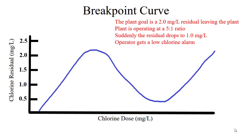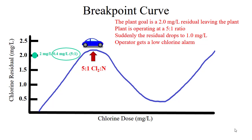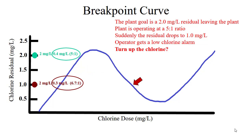You are an operator alone on shift at 2 o'clock in the morning — because problems always occur in the middle of the night or late on a Friday afternoon — and you get a low chlorine alarm. The plant effluent water has a total chlorine residual of 2 mg/L with an ammonia dose of 0.4 at a 5-to-1 ratio, and suddenly the plant effluent total chlorine residual drops to 1 mg/L. Should the operator immediately turn up the chlorine feed rate? The answer is no. The first thing to do is investigate the chlorine and ammonia feed rates to ensure both are correct before making any major adjustments. In this scenario, there was a leak on the ammonia feed pump, and the ammonia feed rate decreased from 0.4 to 0.3 mg/L. This change moved the plant from a 5-to-1 ratio to a 6.7-to-1 ratio. If the operator had immediately turned up the chlorine without checking both feed pumps, the plant could have moved to breakpoint, putting it out of compliance and causing a water quality problem.